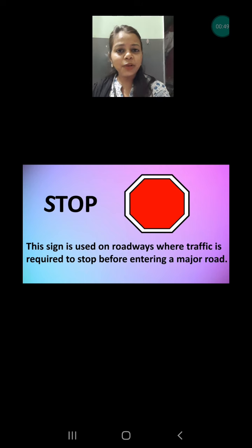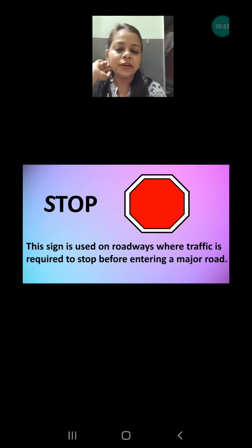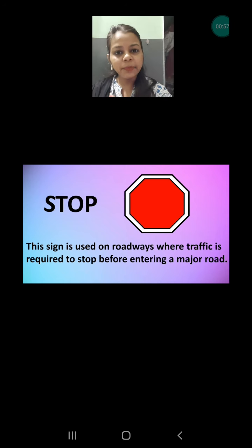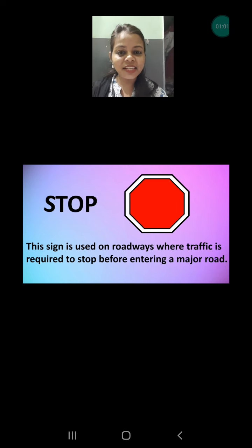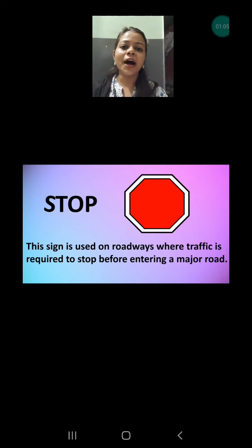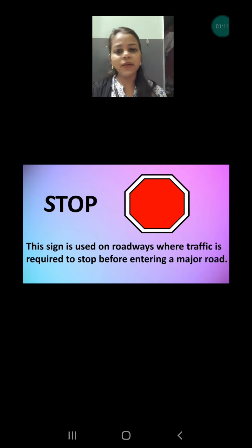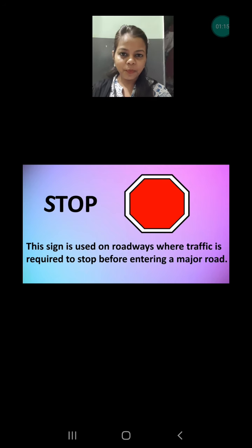The first sign is very common. You must have seen this sign in the hand of the traffic police when he is trying to stop traffic, or sometimes on a board along the road. This board is red in color and it means you have to stop your vehicle — whatever you are riding: bike, motorcycle, car, whatever you are driving. This sign means you have to stop.